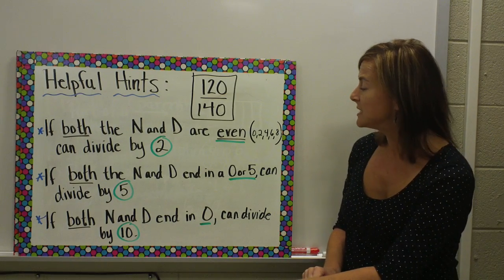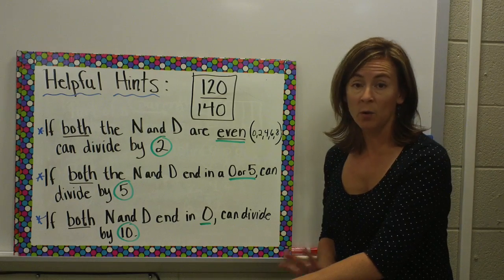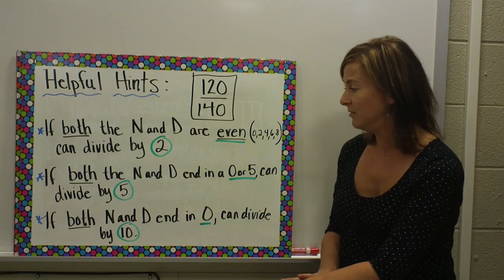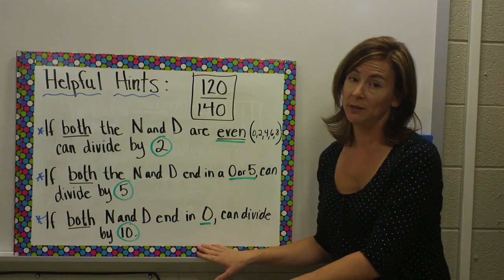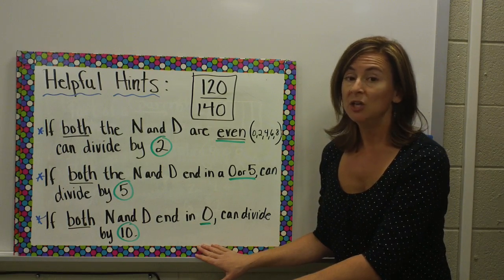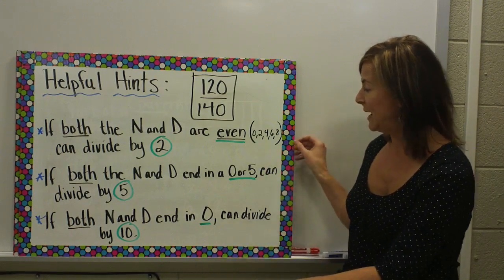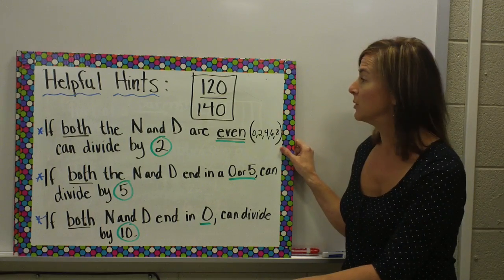If both the numerator and the denominator end in a 0 or a 5, you can divide both of them by 5. And if both the numerator and denominator end in a 0, you can divide both by 10 to help get you on the road to simplifying.